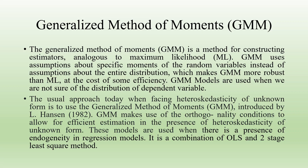The usual approach today when facing heteroscedasticity of unknown form is to use the GMM model. GMM makes use of orthogonality conditions to allow for efficient estimation in the presence of heteroscedasticity of unknown form. These models are also used when there is a presence of endogeneity in the regression models, and they are considered to be a combination of OLS and the two-stage least-squares method.